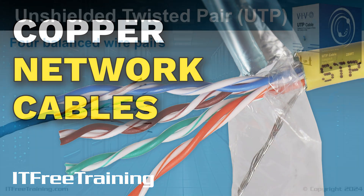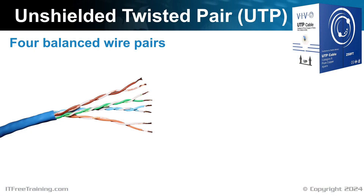Let's have a look at copper network cables. The most used cable in networking is unshielded twisted pair, otherwise known as UTP. The cable has eight wires which are organized into four pairs. Each pair operates on the principle of balanced transmission, where each wire carries a signal that's the inverse of its counterpart. This design effectively cancels out electromagnetic emissions from the wires, enhancing signal integrity and reducing interference, which has contributed to the widespread preference of UTP in various networking applications.